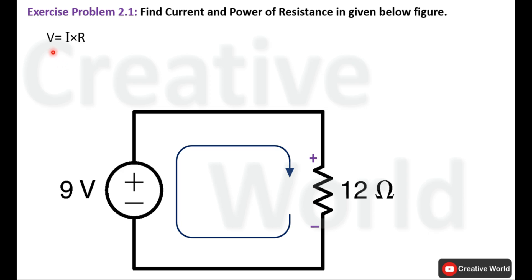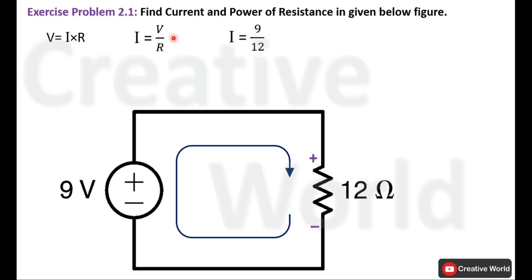Now we will use Ohm's law to calculate current through this resistance. The basic equation is V equal to I multiplied by R. Voltage and resistance values are known and we want to calculate I, so we divide both sides by resistance: I equal to V divided by R. Entering the values — voltage is 9 volt and resistance is 12 ohm — we calculate I as 0.75 ampere.